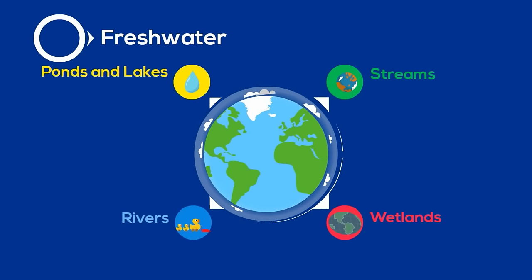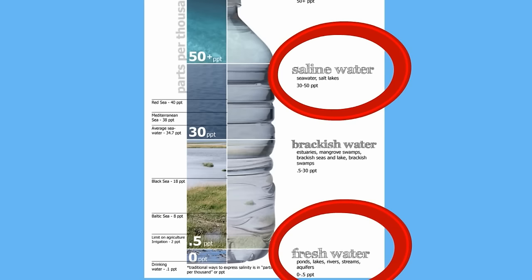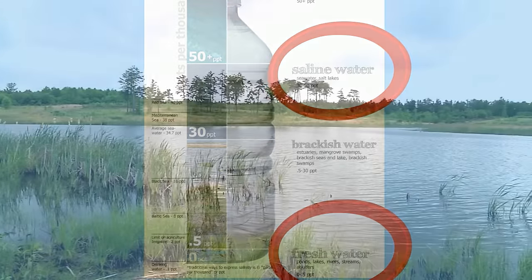Salt water is 30 to 50 parts per thousand salt to water, whereas freshwater is only 0.5 parts per thousand. Let's take a look at freshwater biomes.